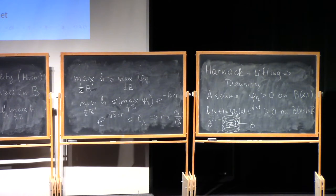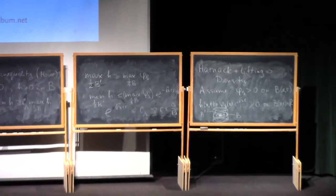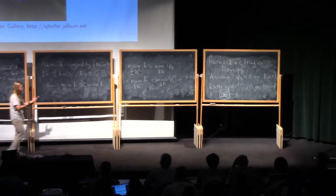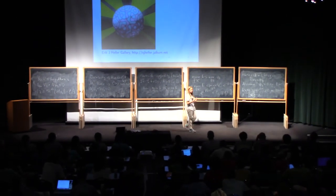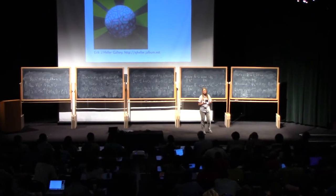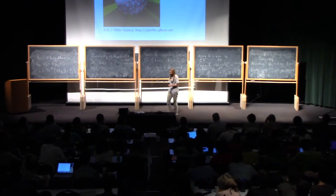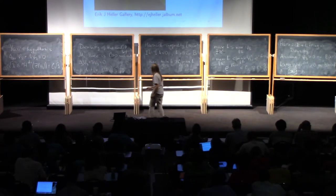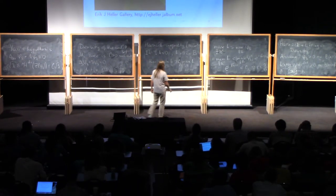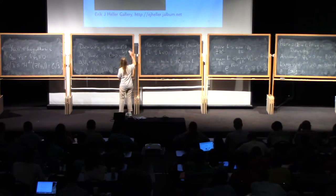It's very far from the Yau hypothesis. It will not give you this result. But at least it gives you some feeling that when you change the eigenvalue, the nodal set changes and it becomes denser and denser when you increase the eigenvalue.